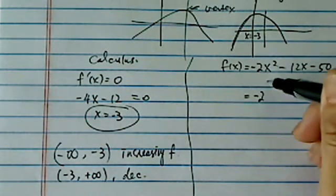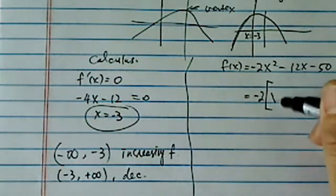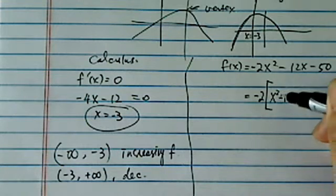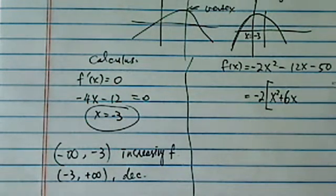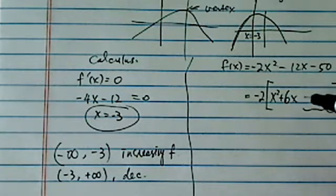So here's what we're going to do. We're going to pull the -2 out here. I'm going to have x² + 6x here, minus 50. I left a little space here because I'm going to add a magic number, subtract a magic number.